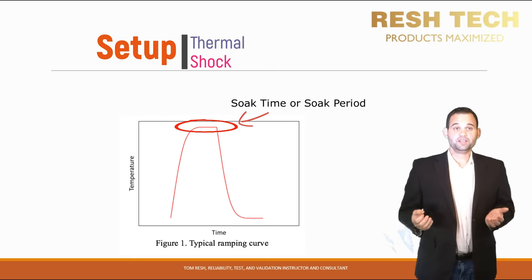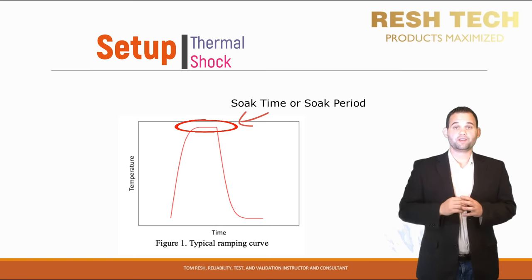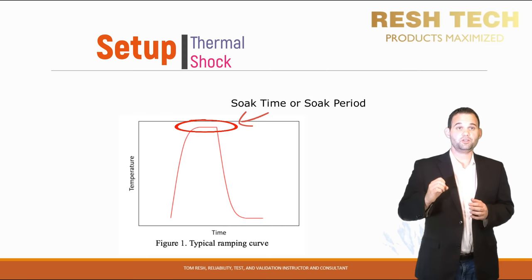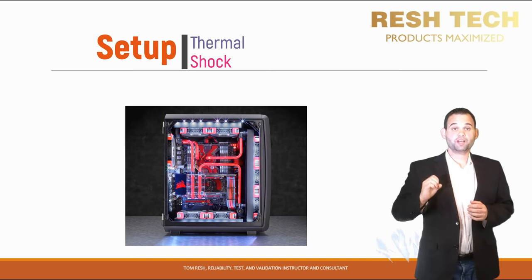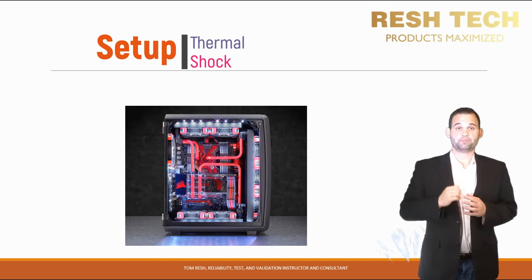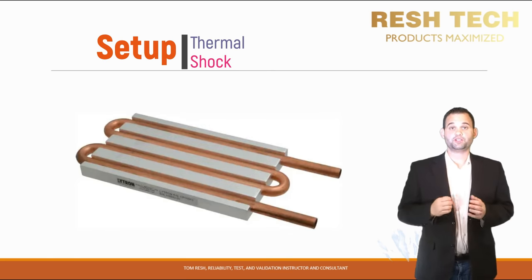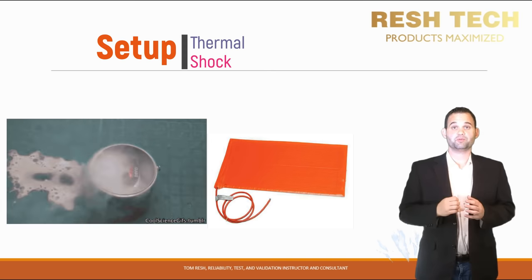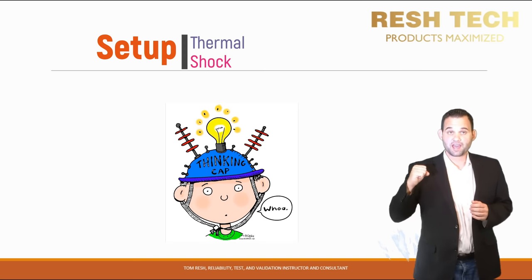Let's talk about soak times. You need to soak your system long enough for it to achieve thermal equilibrium. This can be less than an hour for small systems or parts, but can take hours or even days for larger systems. For larger systems, try to be creative in reducing soak times — such as identifying features like active cooling that can be leveraged. For instance, if you have a liquid-cooled system, you can run higher and lower temperatures that match the chamber set points and speed up the change of temperature to reach thermal equilibrium. You can also get creative with cold plates, hot plates, liquid nitrogen, or heating blankets to speed up thermal shock testing.